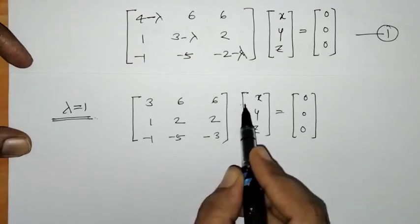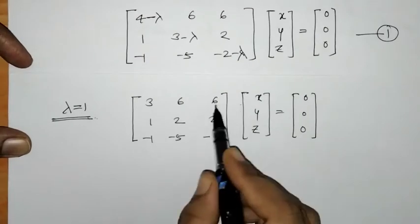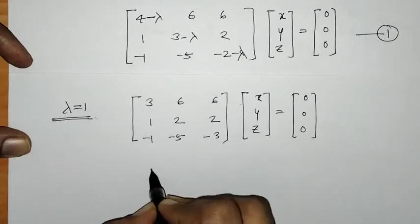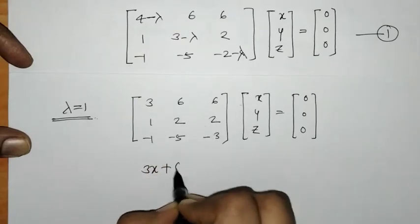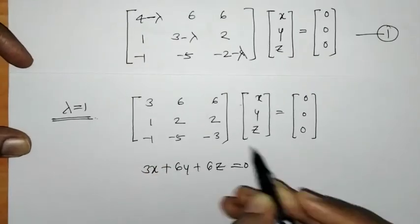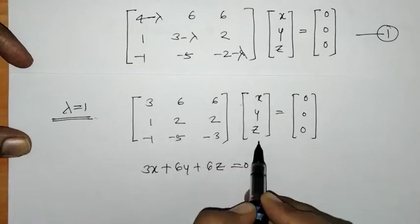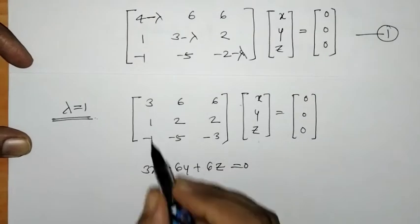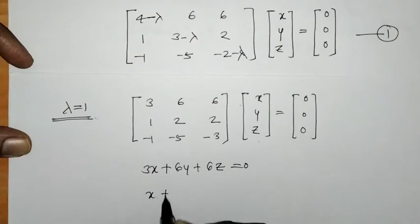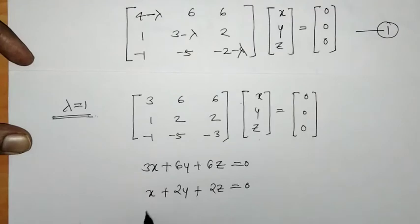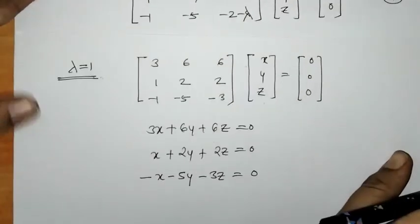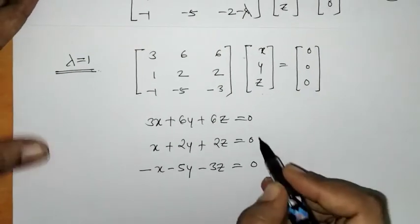We simplify the matrix equation by performing matrix multiplication and equating to zero, getting the system of equations: 3x + 6y + 6z = 0, x + 2y + 2z = 0, and minus x minus 5y minus 3z = 0.